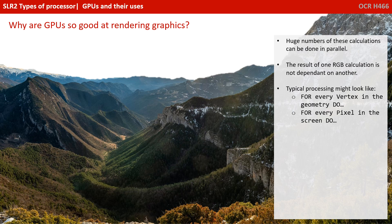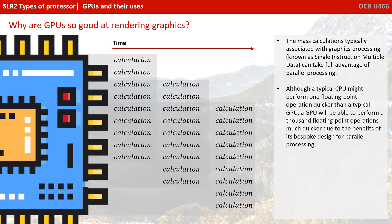Typically, processing might look like this with for loops: for every vertex in the geometry, do this calculation; for every single pixel on the screen, do this calculation. The mass calculations typically associated with graphical processing — SIMD — can take full advantage of parallel processing capabilities. Although a typical CPU might perform a single floating point operation quicker than a typical GPU, the GPU will be able to perform 1000 floating point operations much quicker, due to the benefit of its highly bespoke design for parallel processing.